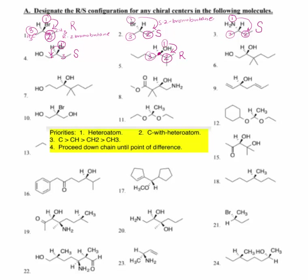For number six, CIP priority one goes to the oxygen. I have a carbon with a heteroatom for number two, and then I have a C — not a CH, but a C — for number three. I am rotating counterclockwise to the left. Hydrogen is to the rear. That means this is an S configuration.